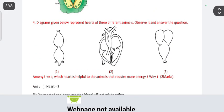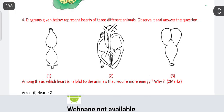Practice these questions and you can score 72 to 75 marks. If you know everything, you can score 80. Practice these questions and diagrams — they are very important. Then, a diagram given below represents the heart of three different animals; observe it and answer the questions.